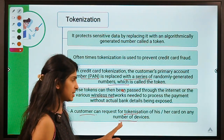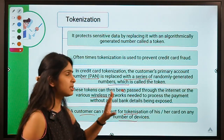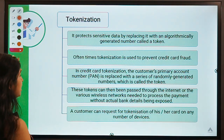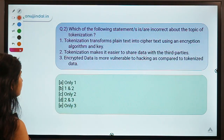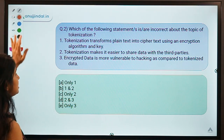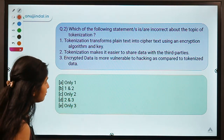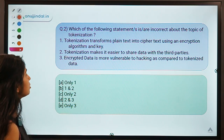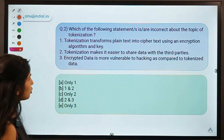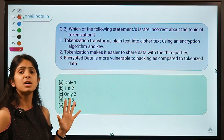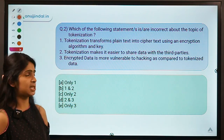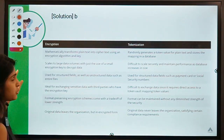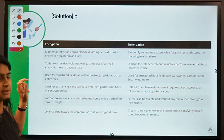Here is question number two: which of the following statements is or are incorrect about tokenization? Three statements are given — select the incorrect ones. The correct answer is option B, meaning statements one and two are incorrect while statement three is correct.